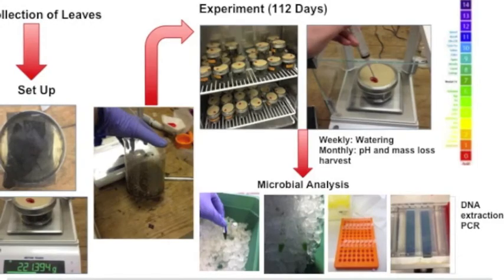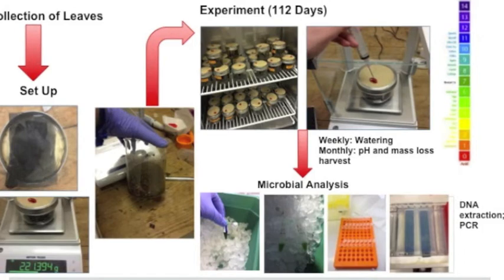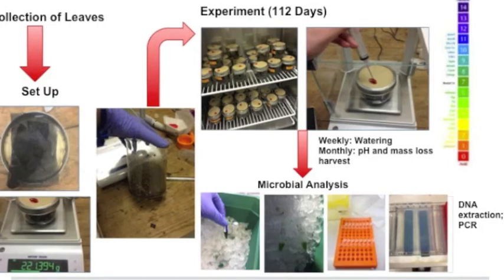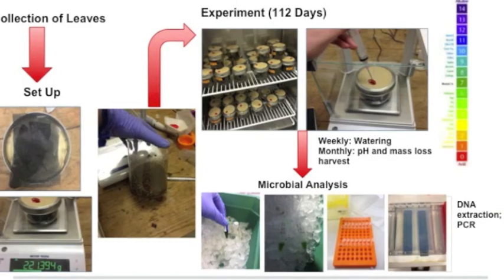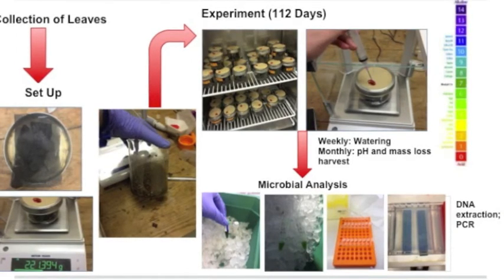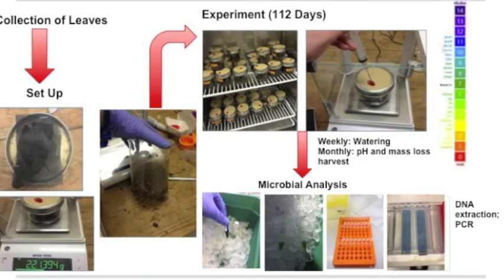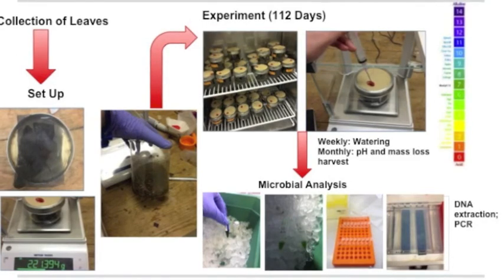The experiment looked at the relationship between different species of leaves and the impact on pH and mass loss, as well as microbial communities within the soil. Leaves from three different species were collected and set up in microcosms to replicate forest-like conditions. Then, each month, the pH of the soil was taken and subsets of the microcosms were harvested to observe mass loss. Additionally, portions of the samples were set aside to observe changes in the microbial communities. The leaves were stored at a constant temperature and watered weekly to keep the moisture constant.